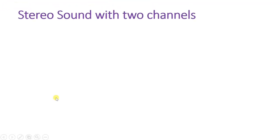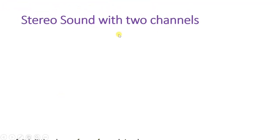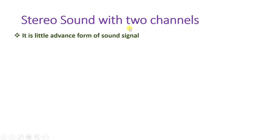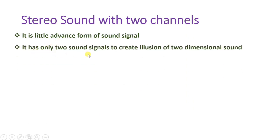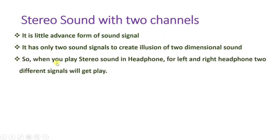Now I will explain stereo sound system with two channels. It is a more advanced form of sound signal where there are two channels with two different sound signals. These two signals are utilized to create an illusion that makes sound appear to come from two dimensions. When you play stereo sound in headphones, two different signals play for the left and right sides.